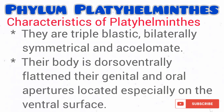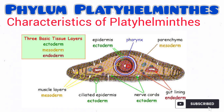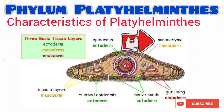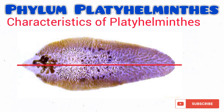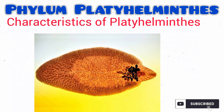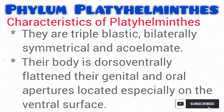Let's talk about the characteristics of Platyhelminthes or flatworms. As you can see from the diagram, they are triploblastic. Take a look at the diagram critically — you can see the ectoderm, the mesoderm, and the endoderm. They are bilaterally symmetrical, which means that their body can be divided into two equal halves through just one plane. Their body is dorsoventrally flattened, which gives them the name flatworm, and their genital and oral aperture is actually located on the ventral surface.